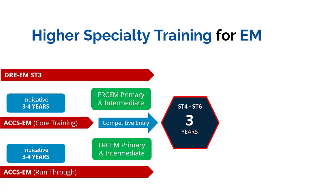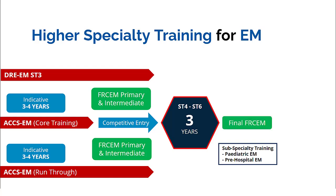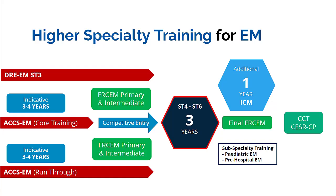Higher specialty training for EM starts at ST4 and lasts for three years. During these three years you can take a subspecialty interest in either pediatric emergency medicine or pre-hospital emergency medicine. There is also the option of doing an additional one year in intensive care medicine, which allows you to obtain dual CCT in emergency medicine and intensive care medicine. In total, the entire training is seven years — four years of ACCS plus three years of HST — or eight years if you pursue the dual CCT in emergency medicine and intensive care medicine.